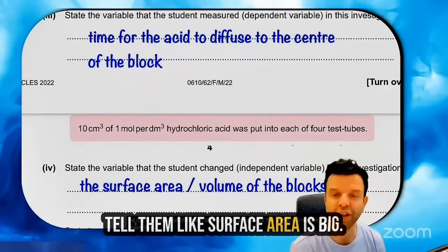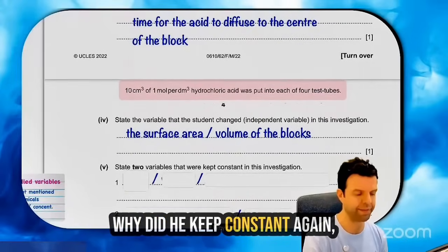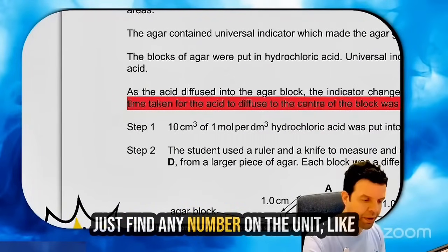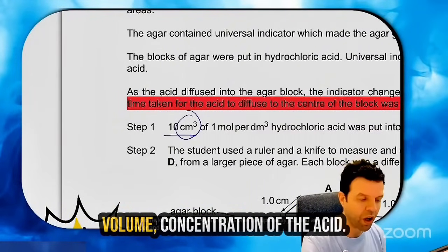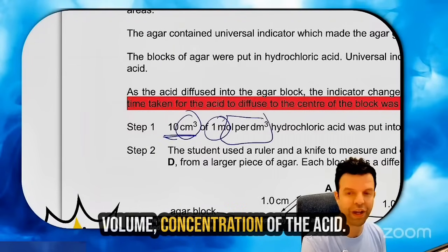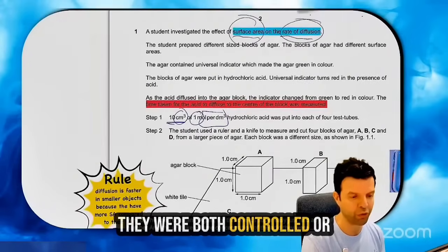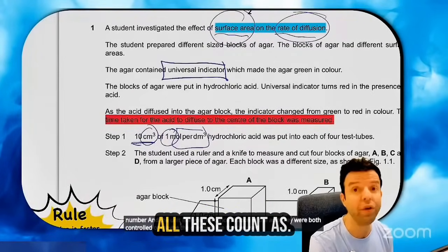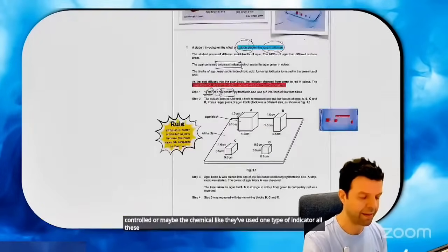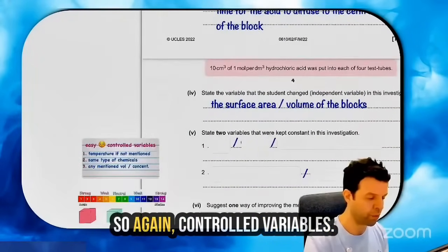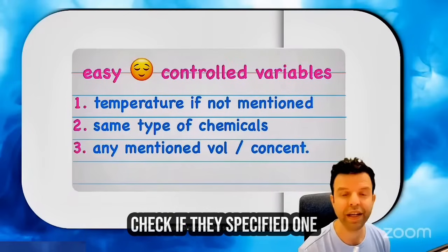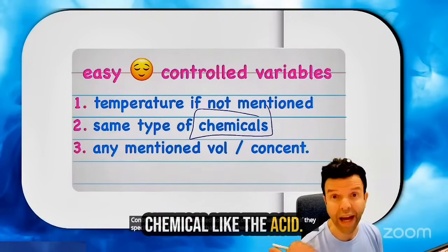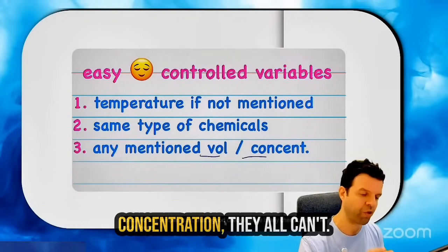What did he keep constant? For this one it's super easy. Just find any number and units — like volume, concentration of the acid. They were both controlled. Or maybe the chemical — like they used one type of indicator. All these count as controlled variables. Check if they specified one temperature — that's good. Check if there is any chemical like the acid. Volume, concentration — they all count. So I'm writing: type, volume, acid, and the indicator.